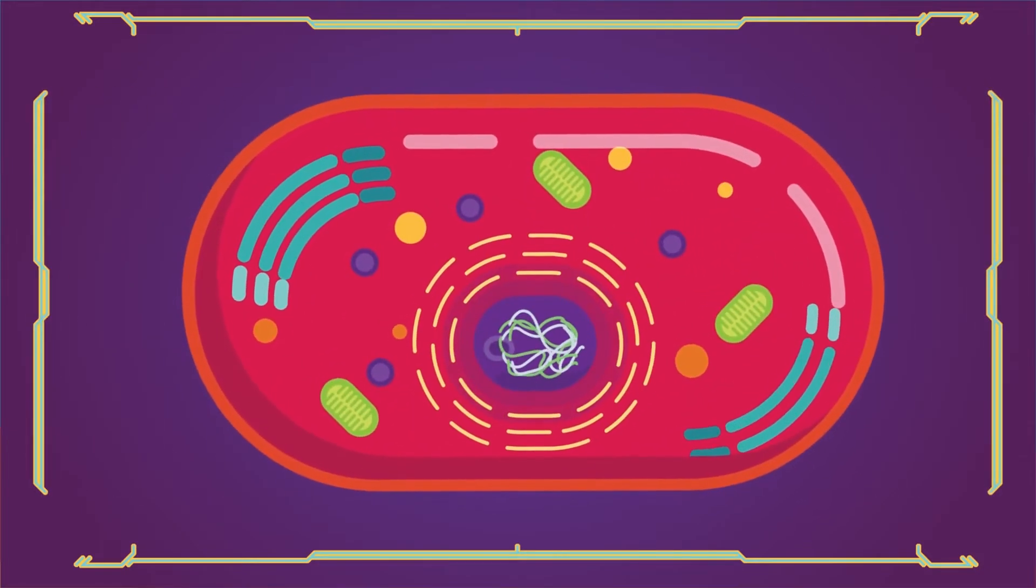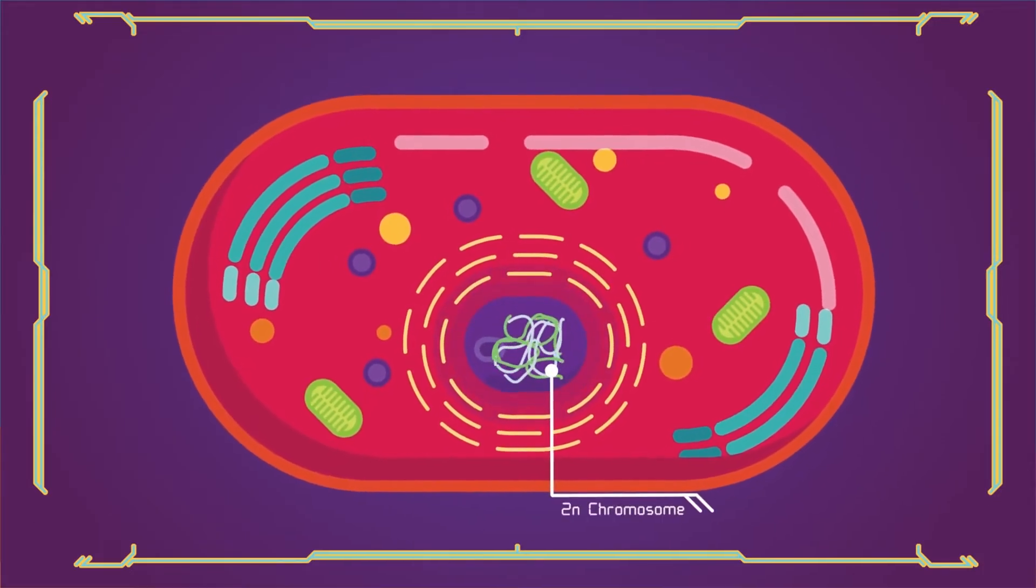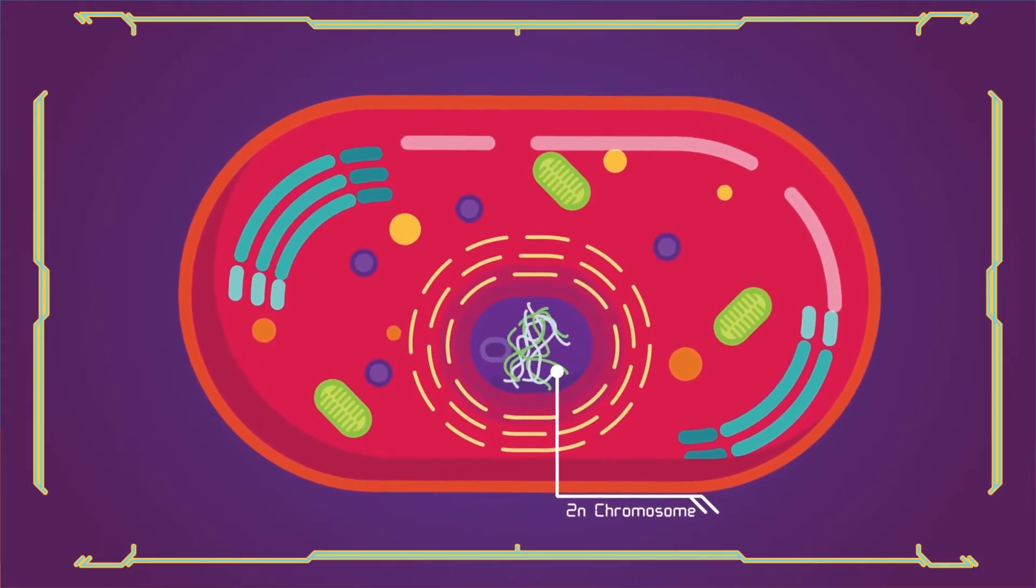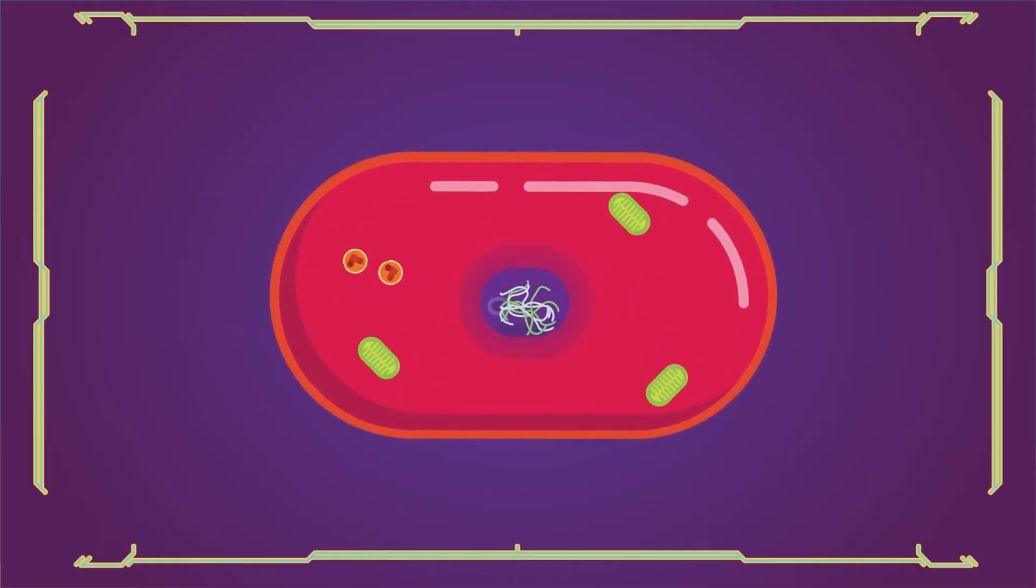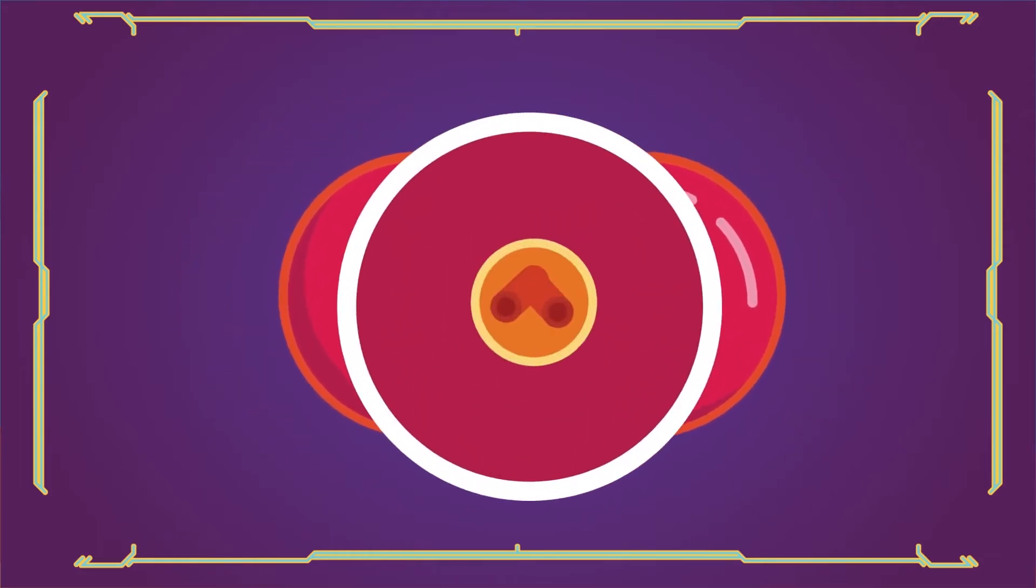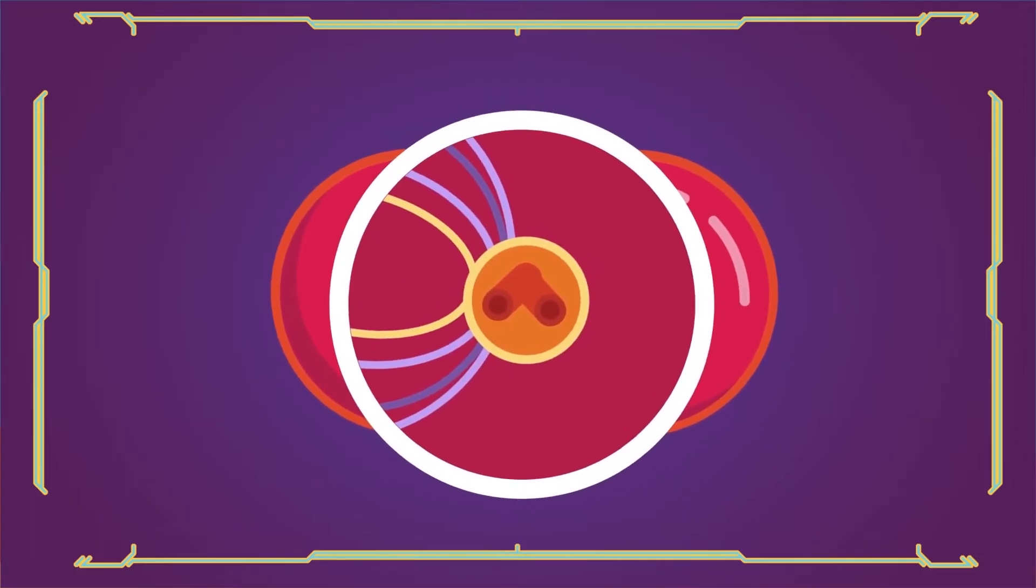First at interphase. In interphase, DNA is copied resulting in two identical full sets of chromosomes to prepare for division. Outside of the nucleus are two centrosomes, each containing a pair of centrioles. These structures are critical for the process of cell division.